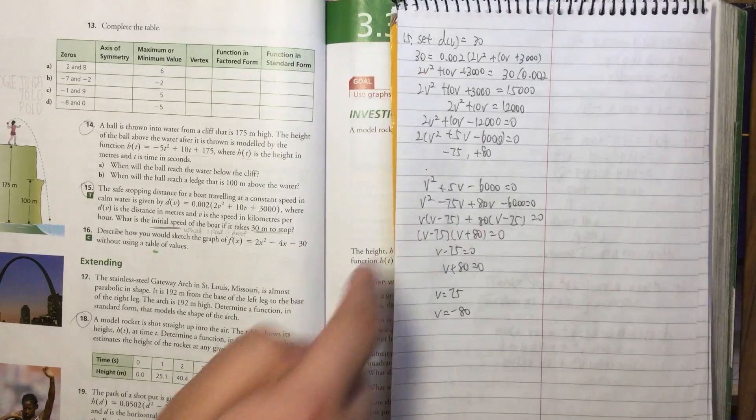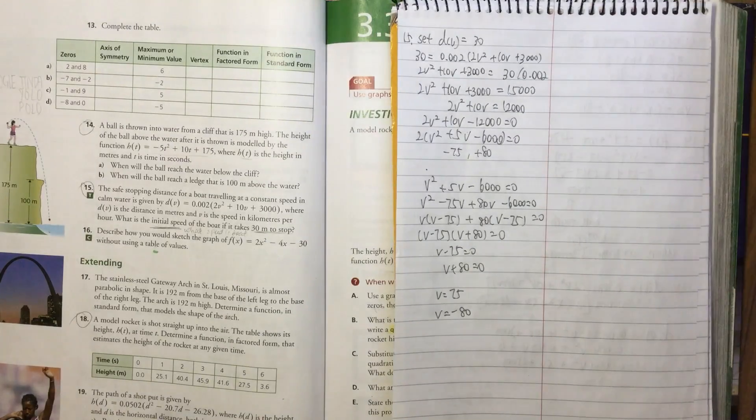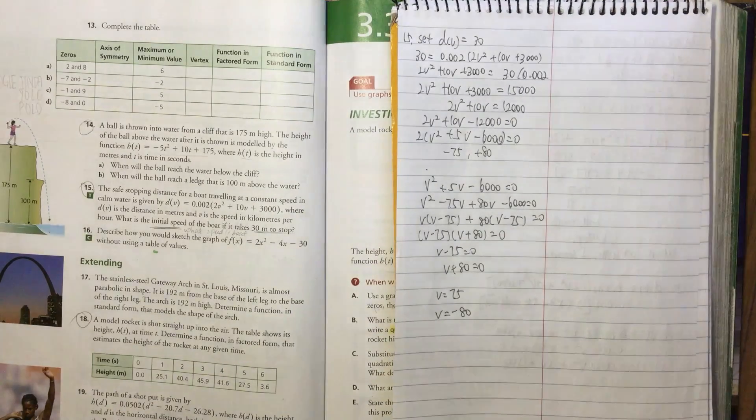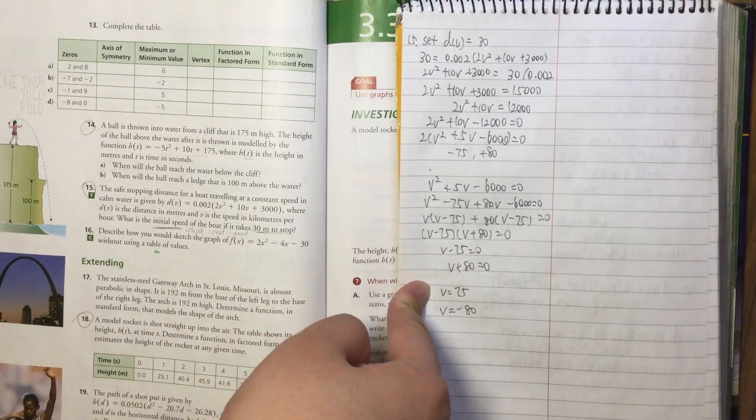But the speed, distance, and altitude always has to be positive, so the answer has to be V = 75.